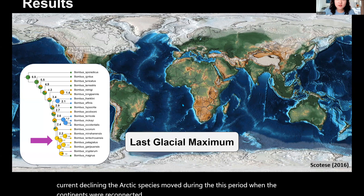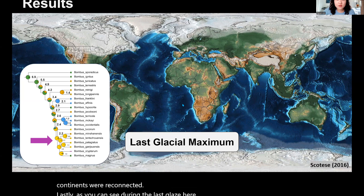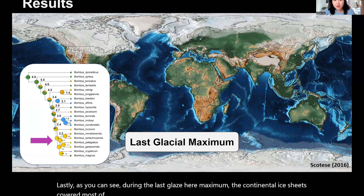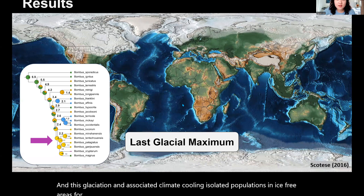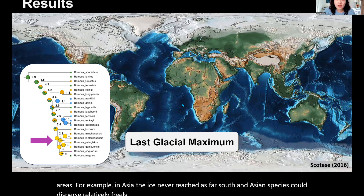As you can see, during the last glacial maximum, the continental ice sheets covered most of Europe and North America. This glaciation and associated climate cooling isolated populations in ice-free areas. For example, in Asia, the ice never reached as far south, and Asian species could disperse relatively freely into the warmer habitats of the Oriental region.